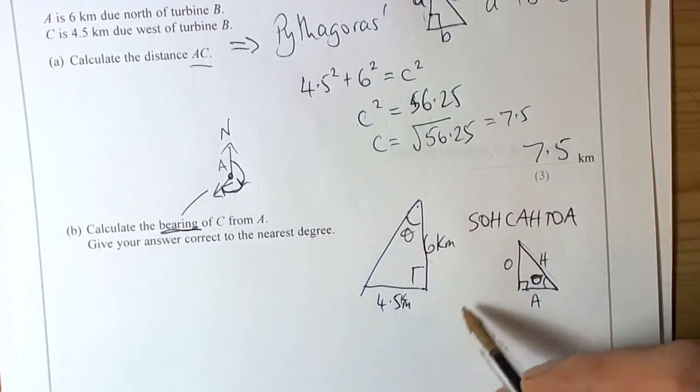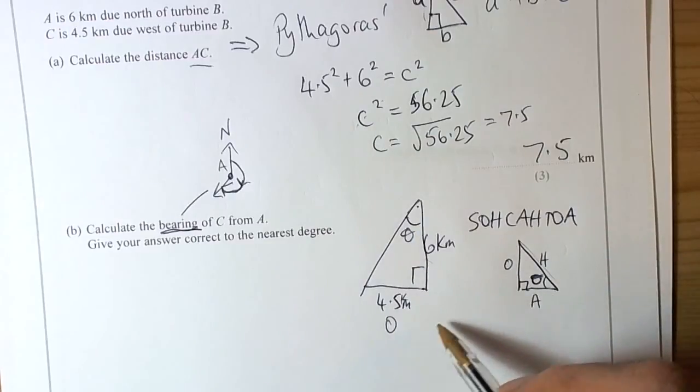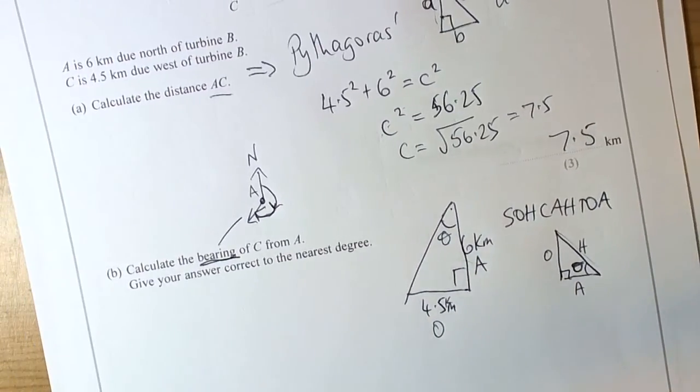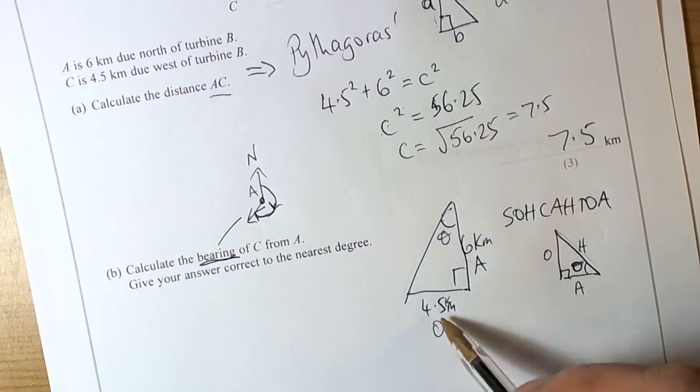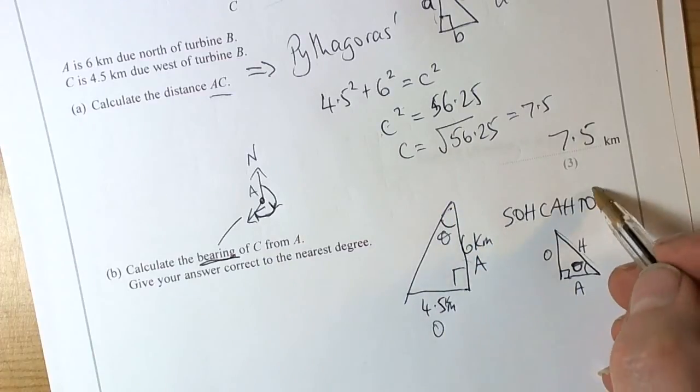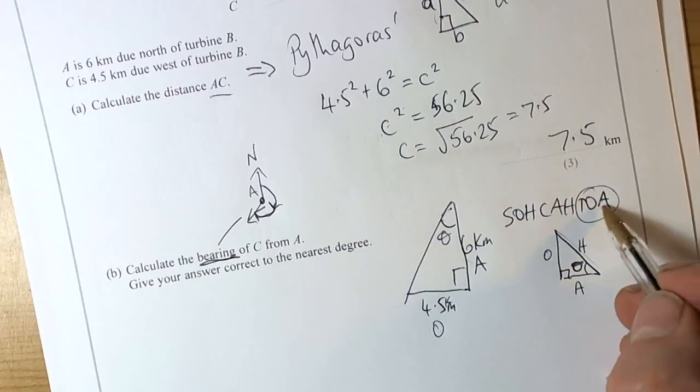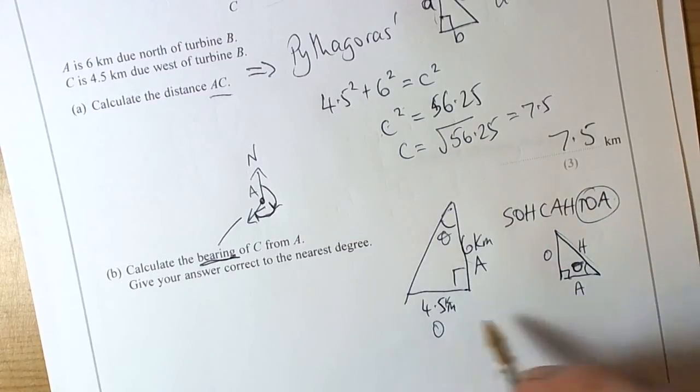So here is our angle theta, so this is the opposite side and this is the adjacent side. Our hypotenuse is not needed, so we are going to be using O and A, and the tangent ratio uses the opposite length and the adjacent length.